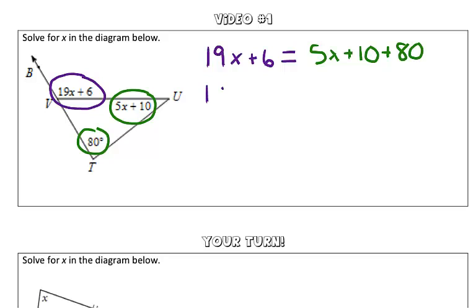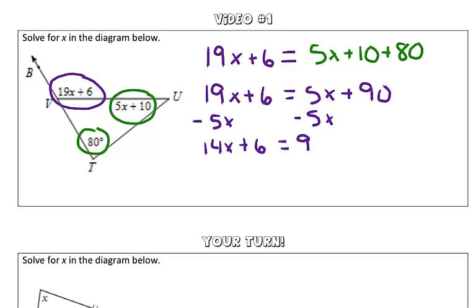So now we're going to go ahead and solve this by combining like terms. So we have 19x plus 6 is equal to 5x plus 90. Using inverse operations, we're going to get all the x's together. So let's go ahead and subtract 5x from both sides. So we have 14x plus 6 is equal to 90.